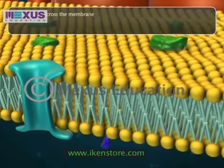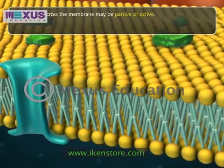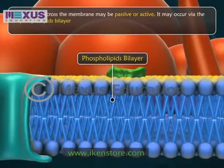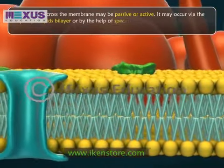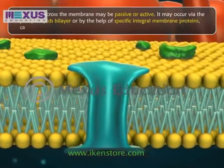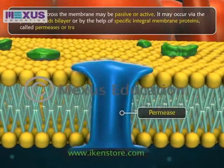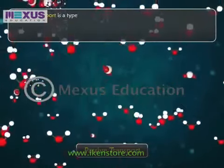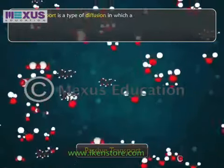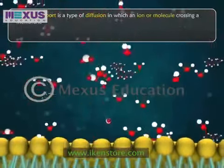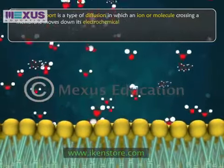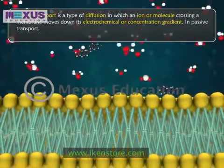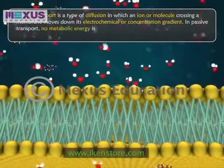Transport across the membrane may be passive or active. It may occur via the phospholipid bilayer or by the help of specific integral membrane proteins called permeases or transport proteins. Passive transport is the type of diffusion in which an ion or molecule crossing a membrane moves down its electrochemical or concentration gradient. In passive transport, no metabolic energy is consumed.